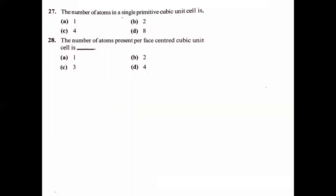The number of atoms in a single primitive cubic unit cell is one. In a simple cube we have 1 atom, in body-centered cube there are 2 atoms, and in face-centered cube there are 4 atoms. Number of atoms per FCC unit cell is four.